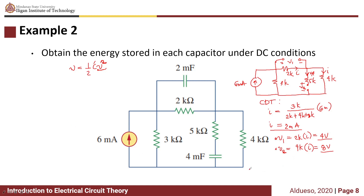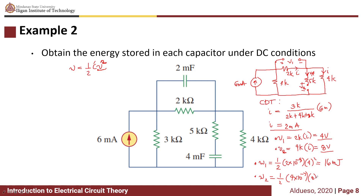Getting the energy stored in the first capacitor — the 2 millifarad capacitor — we have one half times 2 times 10 to the power of negative 3 times 4 squared. This is equivalent to 16 millijoules. Then for the energy stored in the 4 millifarad capacitor, we have one half times 4 times 10 to the power of negative 3 times 8 squared, which gives 128 millijoules.